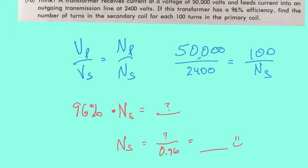Find the number of turns in the secondary coil for each 100 turns in the primary. So we know there's 100 turns in the primary, and we don't know the secondary - that's what it's asking us to find.